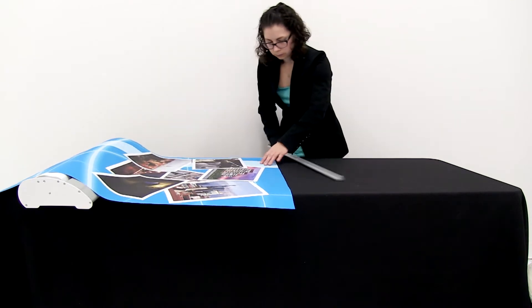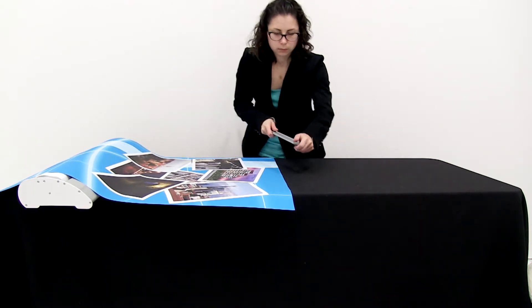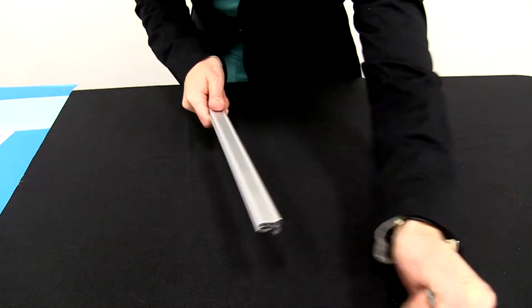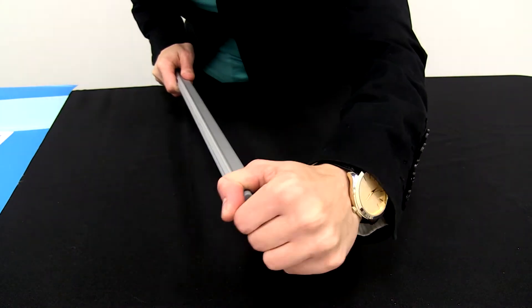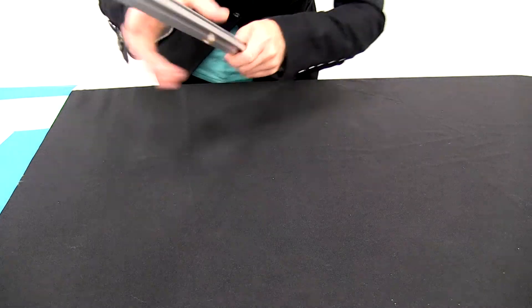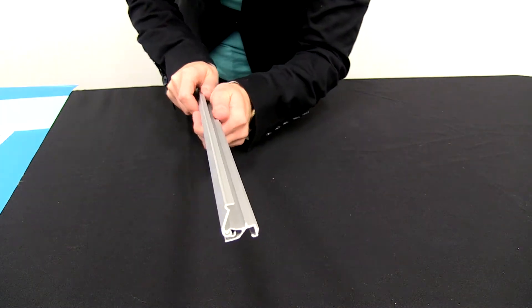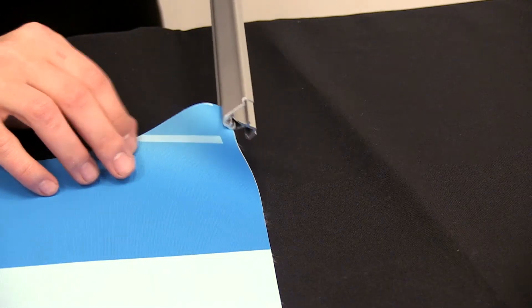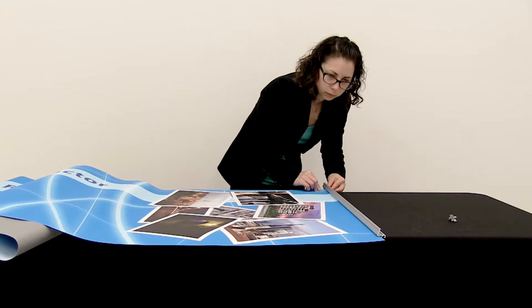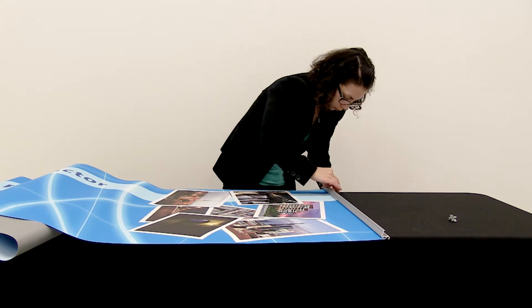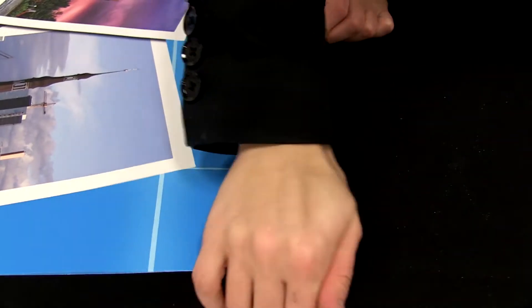The banner install for the Deluxe Pro Retractor is quick and easy. Remove both end caps from the snap rail and set to the side. Open the snap rail, slide the top edge of the graphic completely onto the snap rail, then press down on the snap rail to close it.